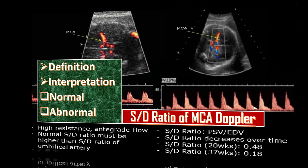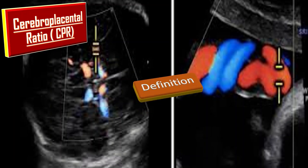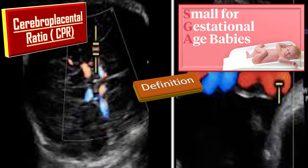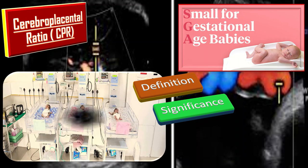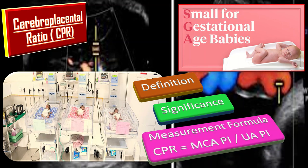Another important parameter is the cerebro-placental ratio (CPR). It is an obstetric ultrasound tool used as a predictor of adverse pregnancy outcome in both small for gestational age and appropriate for gestational age fetuses. An abnormal CPR reflects redistribution of cardiac output to the cerebral circulation and has been associated with intrapartum fetal distress, increased rate of emergency cesarean section, and ICU admissions. It is calculated by dividing the MCA pulsatility index by the umbilical artery pulsatility index: CPR = MCA PI ÷ Umbilical Artery PI.